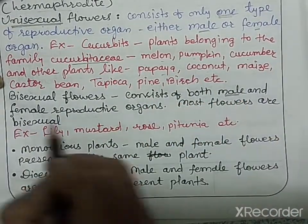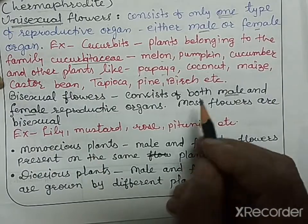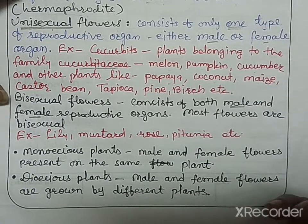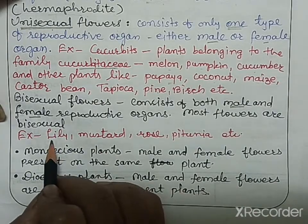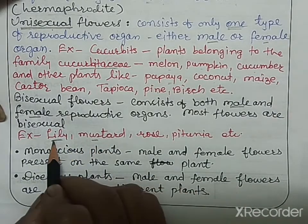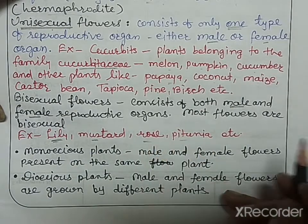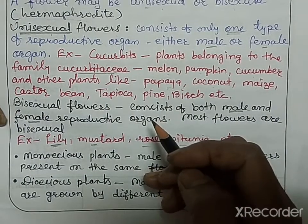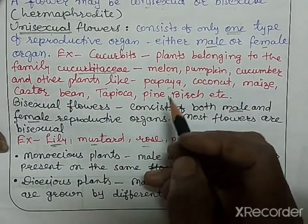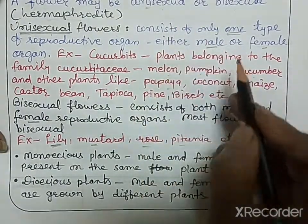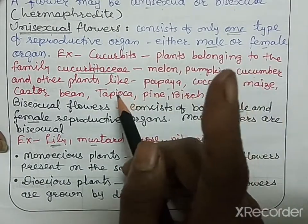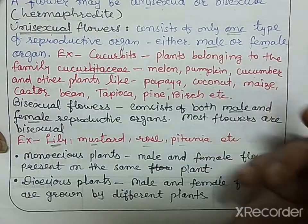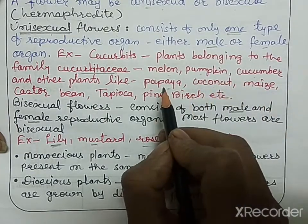Bisexual flowers consist of both male and female reproductive organs in a single flower. Examples include mustard, lily, rose, petunia, and other flowering plants. So there are two types: unisexual flowers, which have only one type of reproductive organ, and bisexual flowers, which have both parts present.